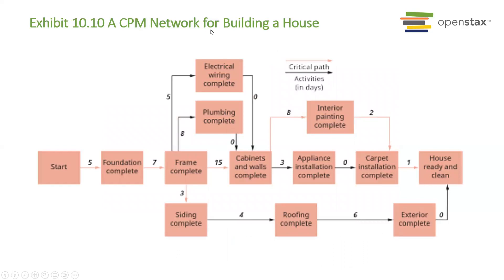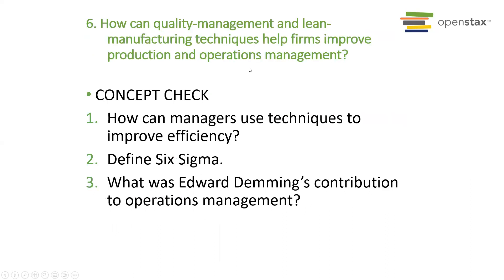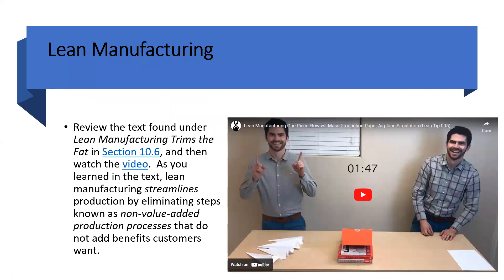This is a CPM network for building a house — what are the phases? Section five asks: how do operations managers schedule and control production? These are some concept checks to review while reading this section in chapter 10. Section six has some concept checks as well. What exactly is lean manufacturing? This video gives an excellent idea of what that is.